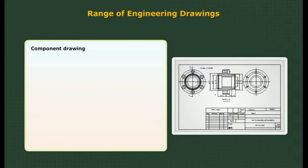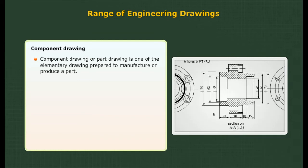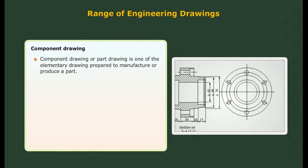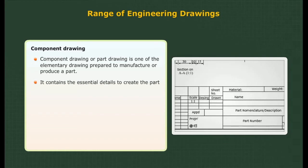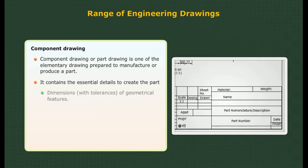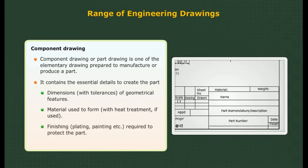Component drawing: a component drawing or part drawing is one of the elementary drawings prepared to manufacture or produce a part. It contains the essential details to create the part: (1) dimensions with tolerances of geometrical features, (2) material used, along with heat treatment if used, (3) finishing — plating, painting, etc. — required to protect the part, and (4) information to identify the part.